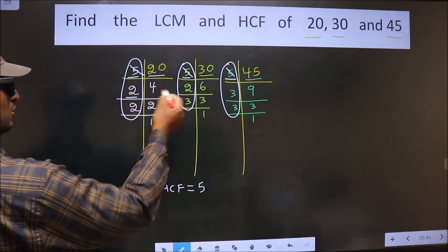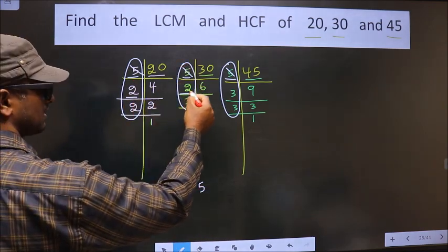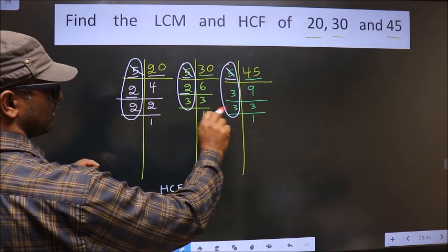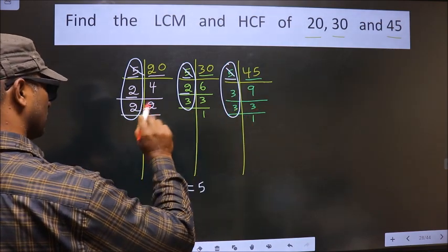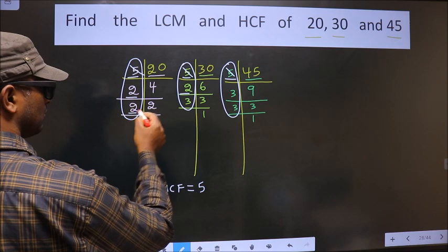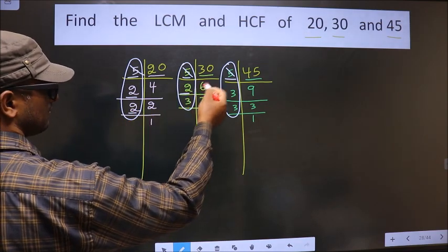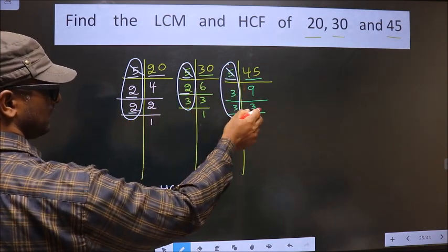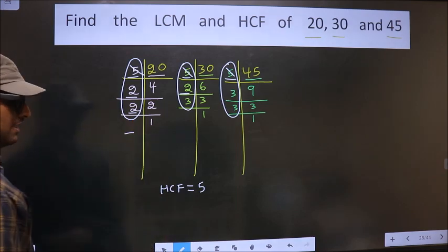Next number is 2. Do we have 2 here? Yes. So next place, do we have 2 here? No. Okay. So go to the next number 2. Do we have 2 here? Yes. But 2 we don't have in the next place. So no more numbers are left.